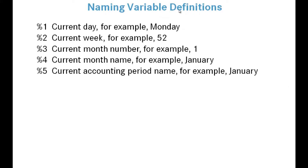In the description field, naming variables can be used: %1 replaces with the current day name (e.g., Monday), %2 with the current week number (e.g., Week 1 or Week 52), %3 with the current month number, %4 with the actual name of the month, and %5 with the current accounting period name. I prefer using %4, and you'll see that throughout these examples.